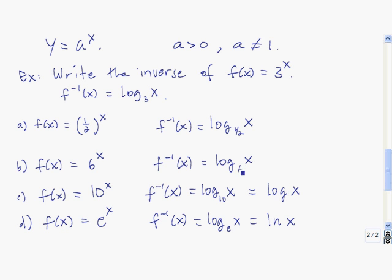The first one has base 1 half, the second base 6, and c is the logarithm with base 10. This one has a special name — it's called the common logarithm. Rather than writing log sub 10, we suppress it and just write log x. So instead of writing log base 10 of x, write log of x and in your mind think of a little 10 down here.